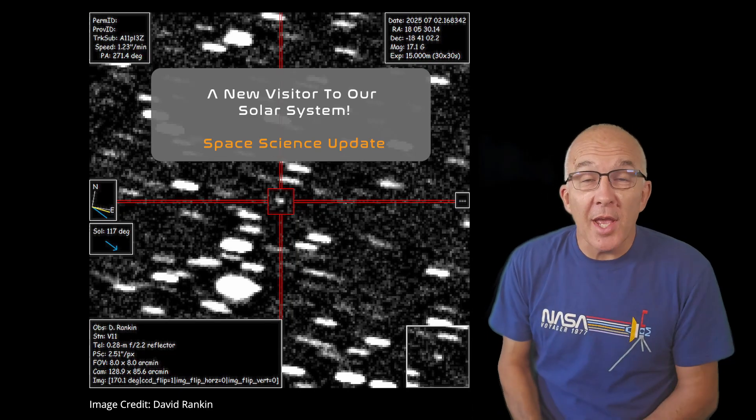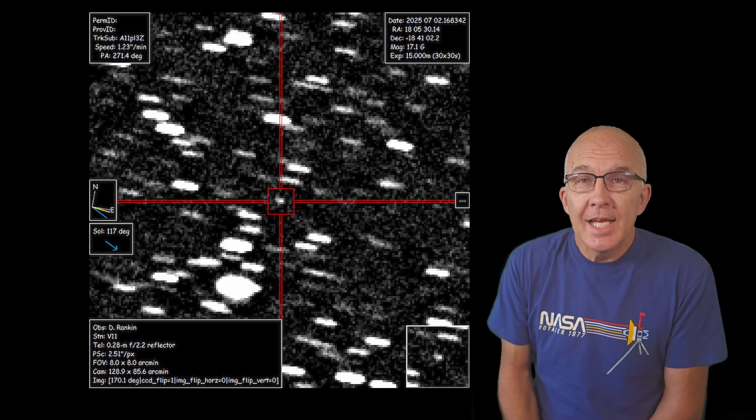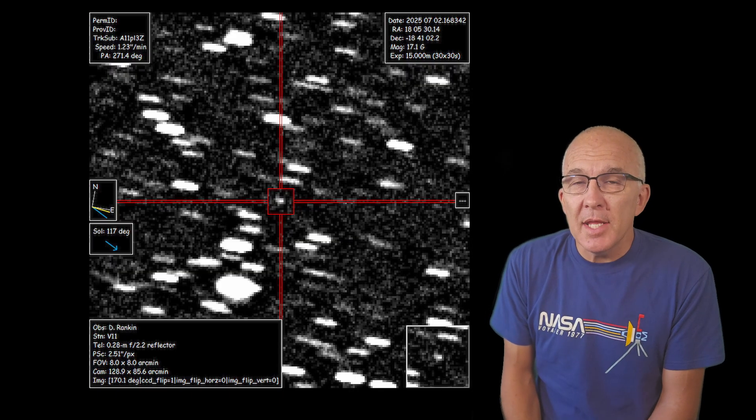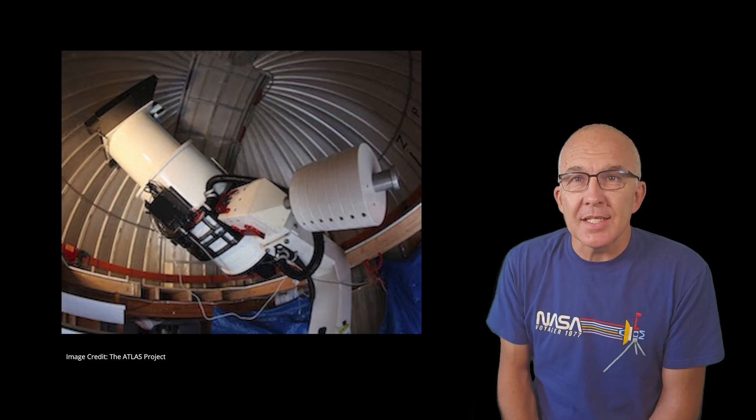Super exciting news today as we have a new visitor in our solar system that's come from another star. Interstellar object A11PL3Z was first observed July 1st by the ATLAS team.